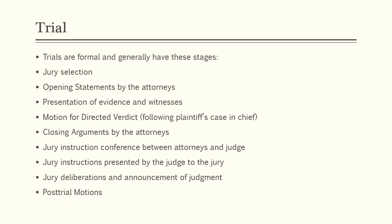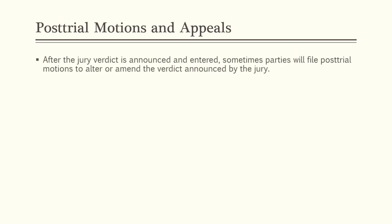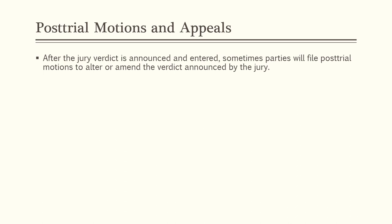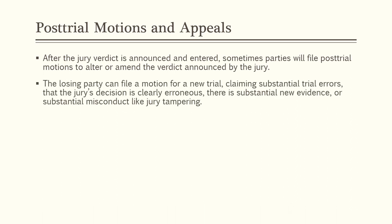After the judgment is entered, there are post-trial motions. The losing party can file a motion for a new trial claiming: substantial trial errors, that the jury's decision was clearly erroneous, that there is substantial new evidence, or substantial misconduct like jury tampering. In criminal cases, you'll also see motions for a new trial based on prosecutorial misconduct — sometimes prosecutors withhold exculpatory evidence which, if given to the defense, would have cleared the defendant or provided a substantial defense.